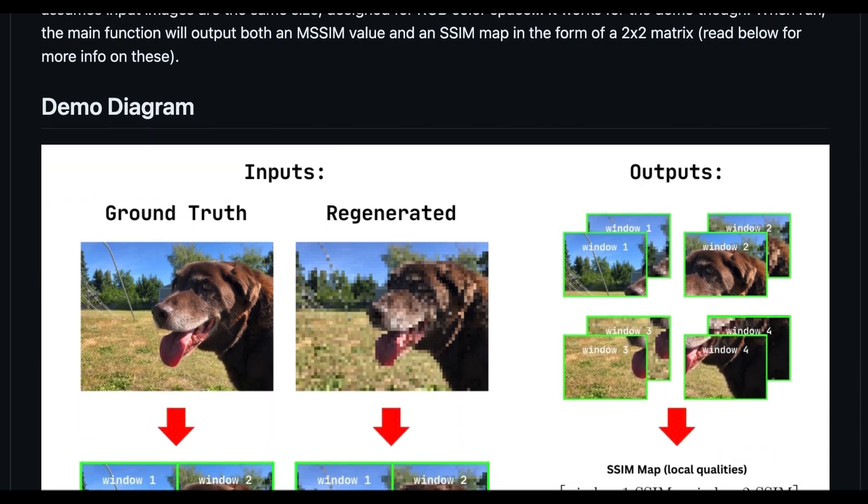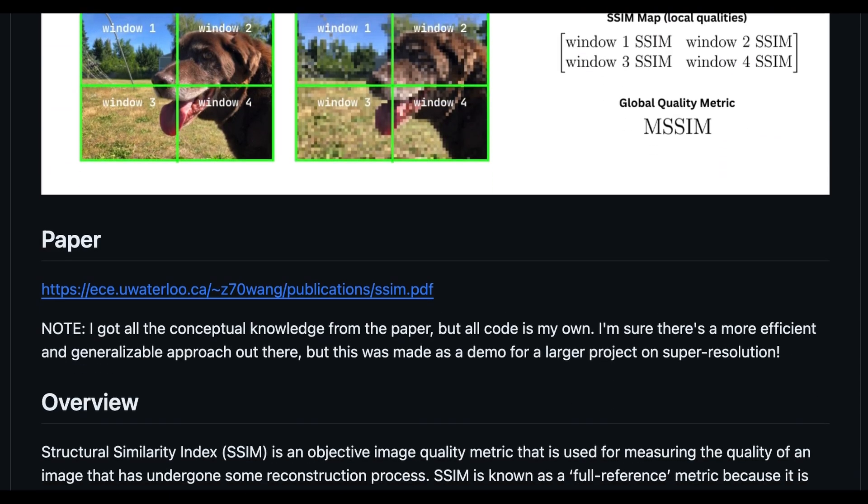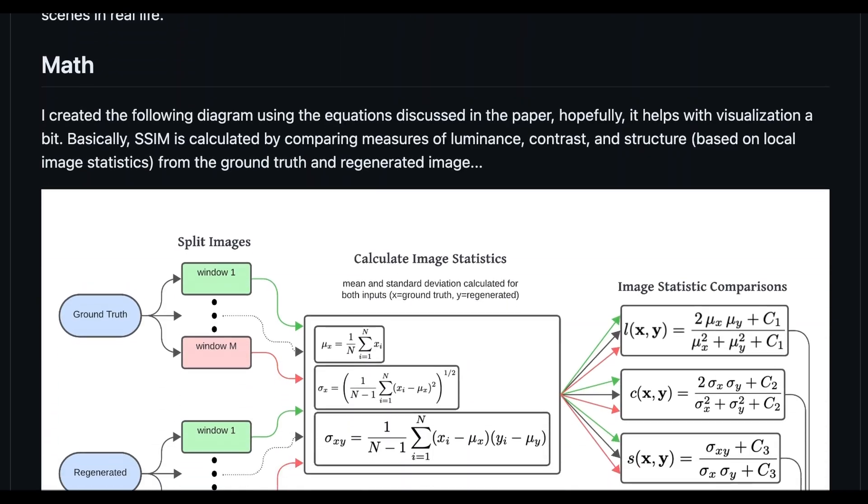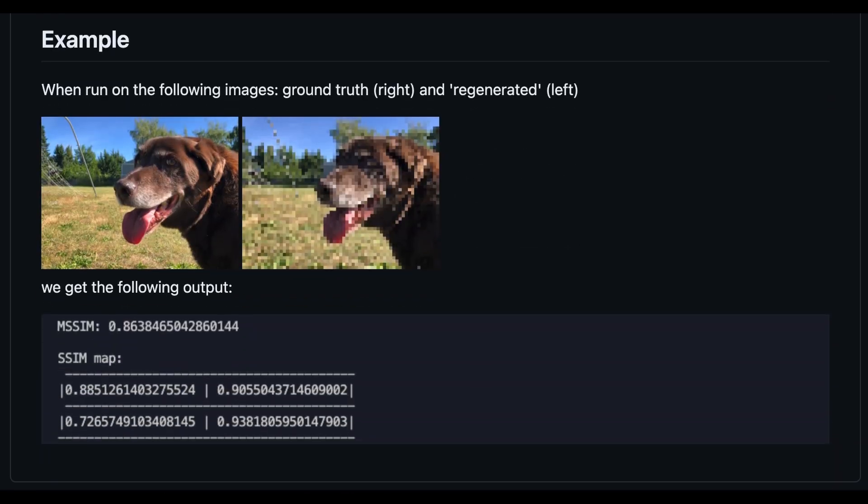Rather than comparing the ground truth and regenerated high-resolution images globally, SSIM focuses on smaller regions and patches. Although it's less important for the applications of super-resolution, this can provide a map of sorts revealing which regions of the regenerated high-resolution image have the highest quality.